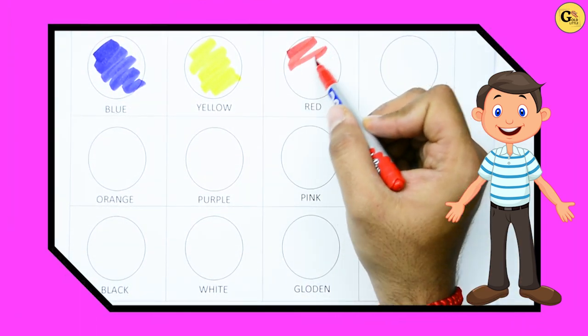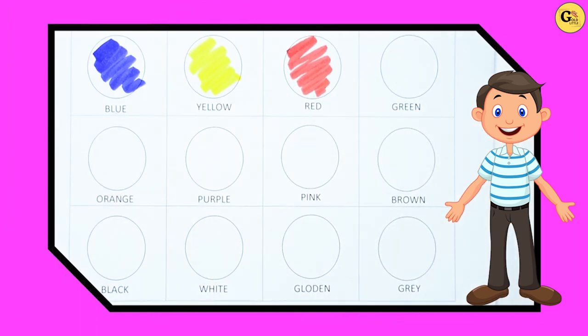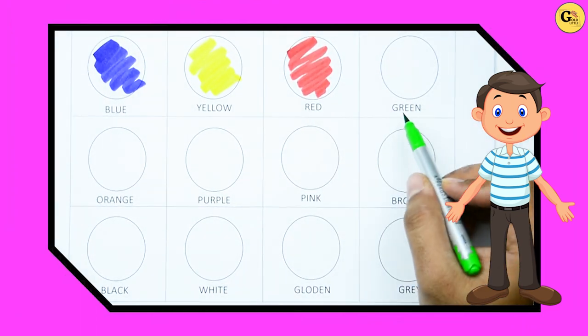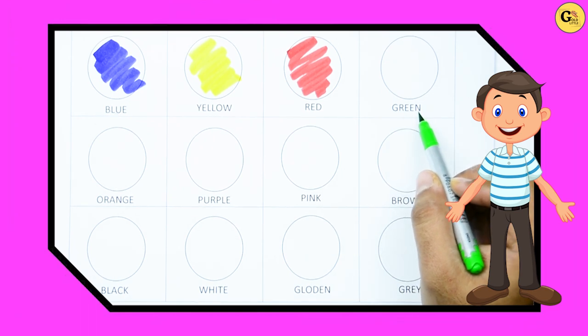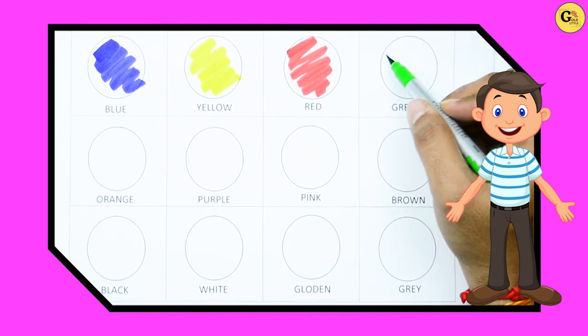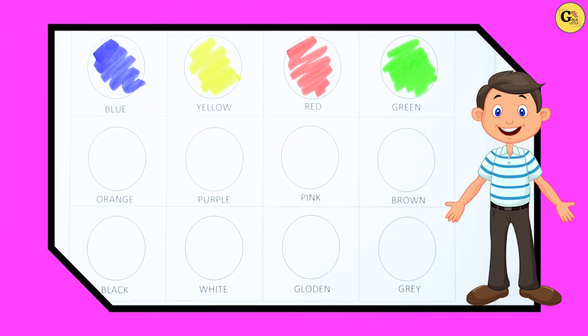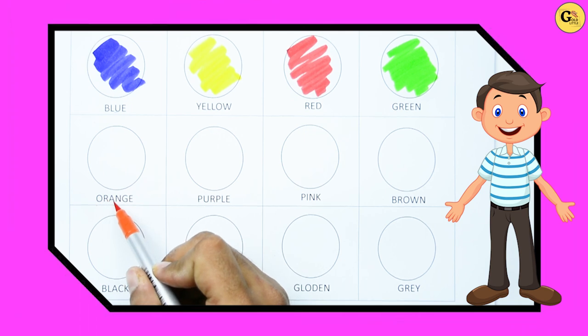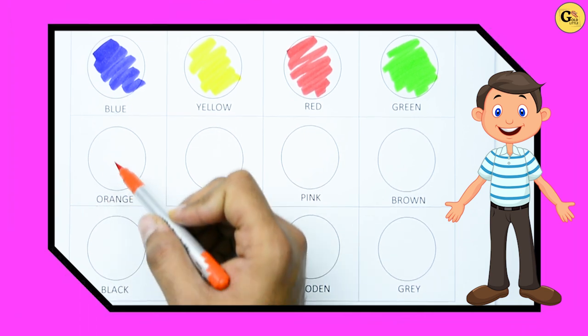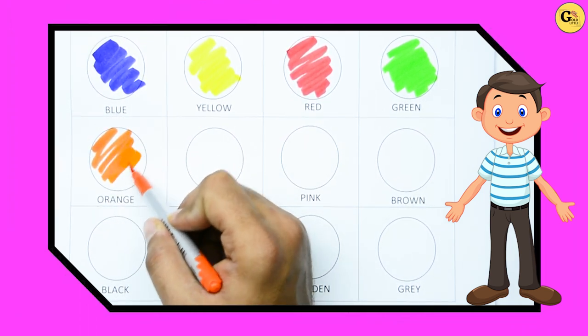Red, red color. Green, G-R-double E-N. It's green color. Yes kids, it's green color. G-R-double E-N, it's green color. Which color is this? O-R-A-N-G-E. It's orange, orange color.